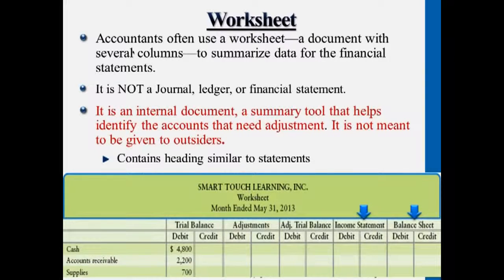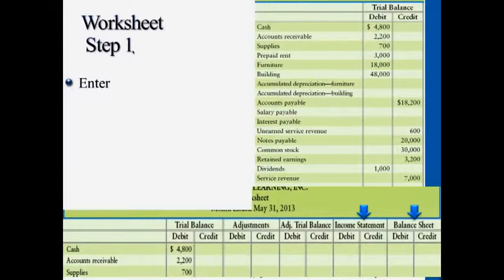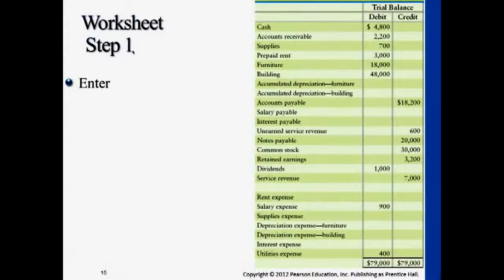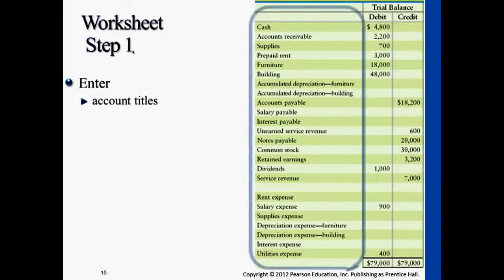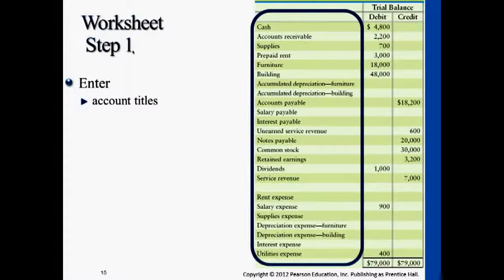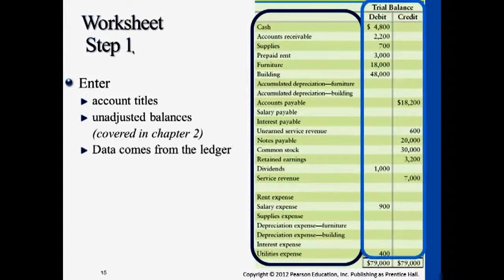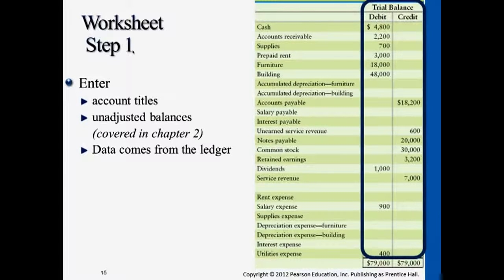Let's take a look at how this works from the beginning. The first column: after all the transactions happen, we summarize them — we already captured them in journals, summarized them in T-accounts, then it goes into trial balance. The left-hand side has all the accounts relating to transactions that happened in a certain period, with dollar amounts from T-account balances copied to the unadjusted trial balance.